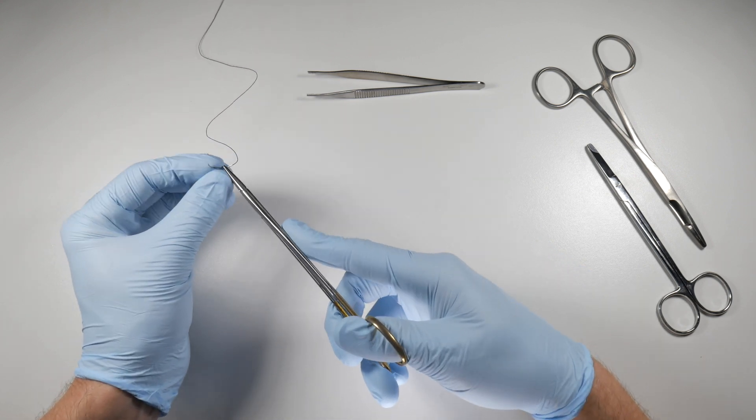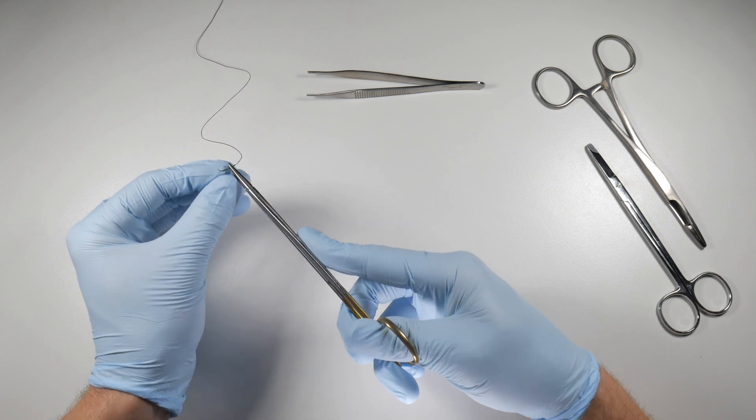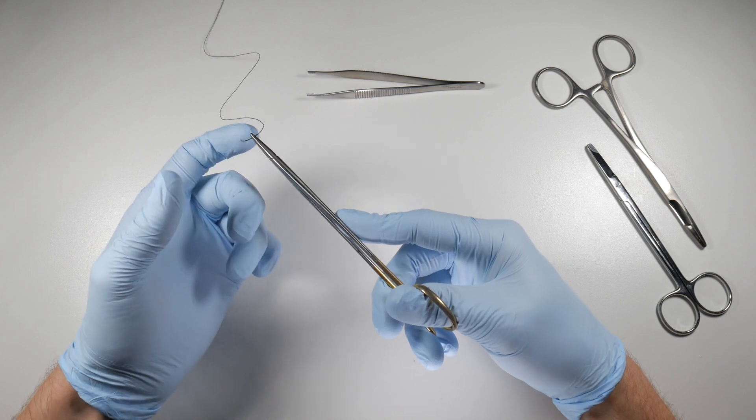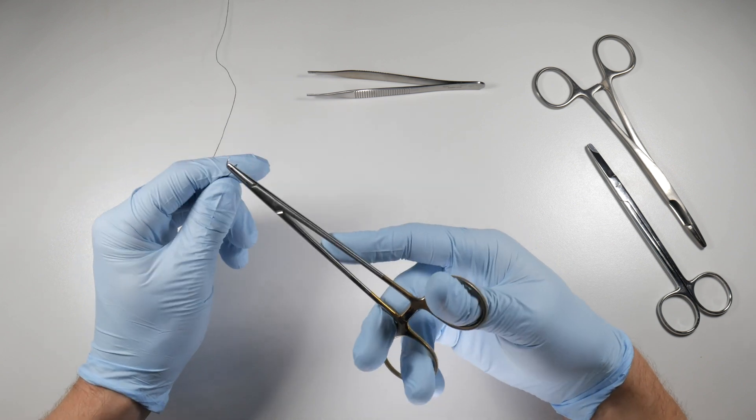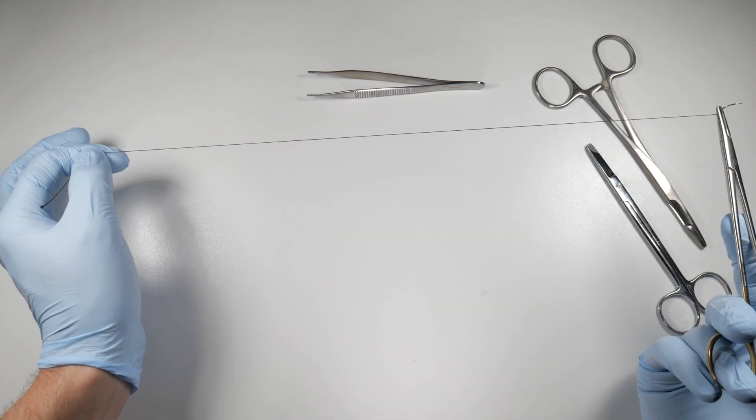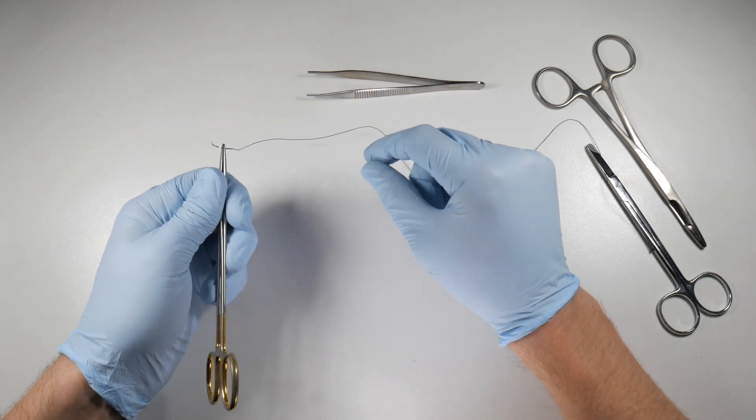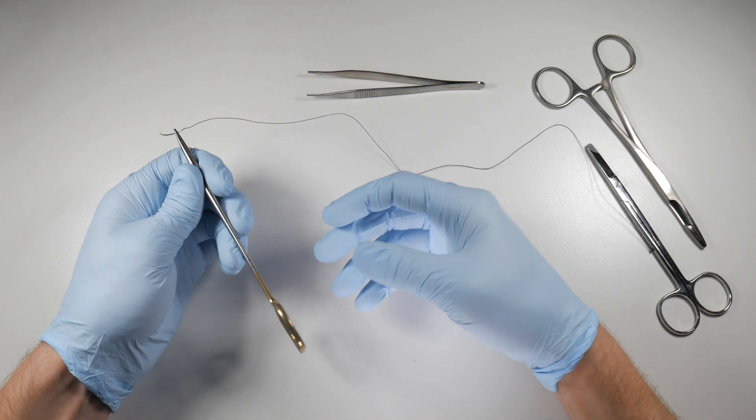You will have a needle, and it could be any size, could be three-eighths of a circle, could be a half circle, quarter circle. It's going to have a swaged end on it, and it's going to have some type of either monofilament or polyfilament suture with a non-absorbable or absorbable type of suture.